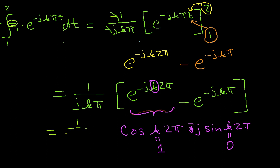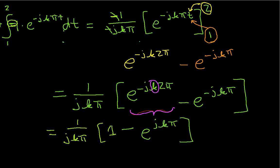So it turns out then that this integral can be written as 1 over jkπ times this guy which is 1, and now we'll have to make this go away, minus e^(jkπ). So all the sudden things have gotten quite a bit simpler.